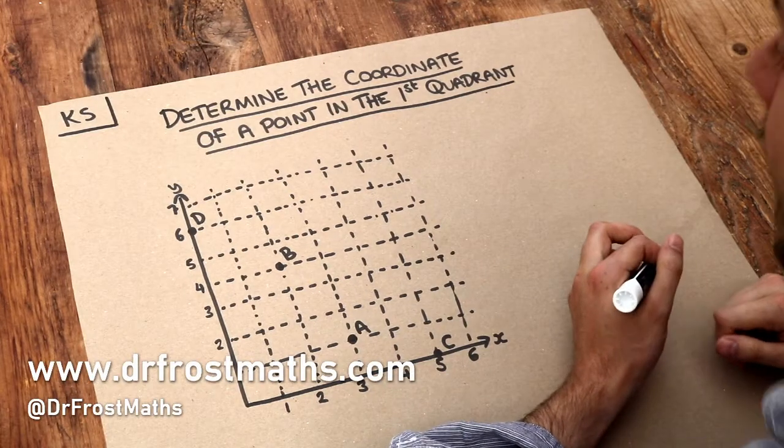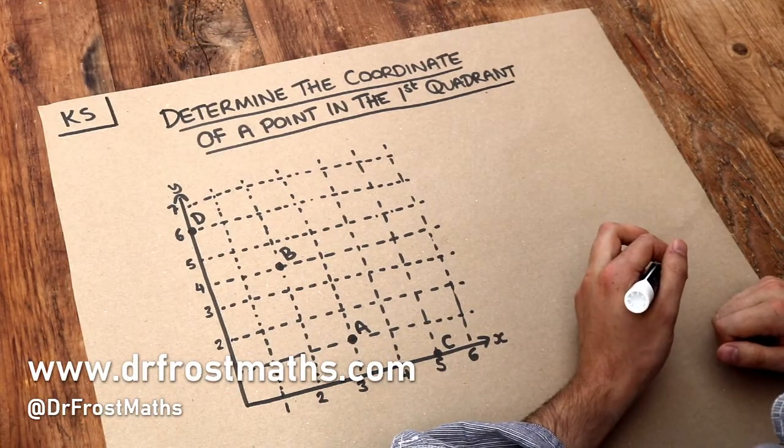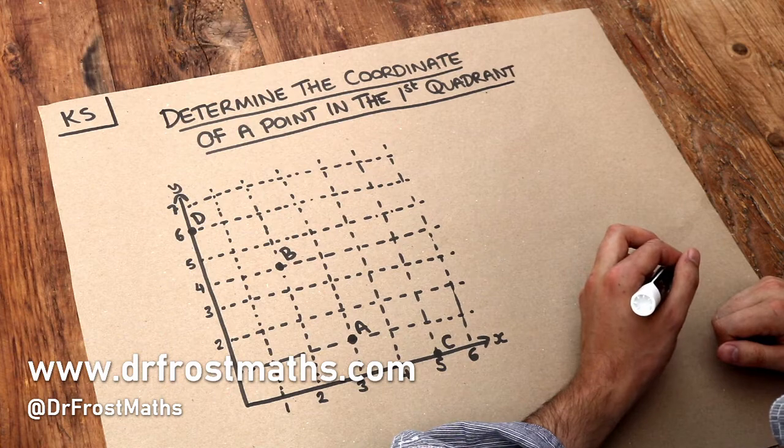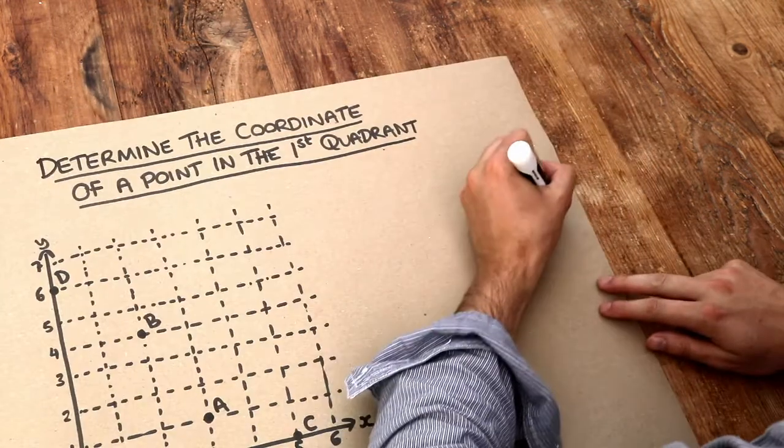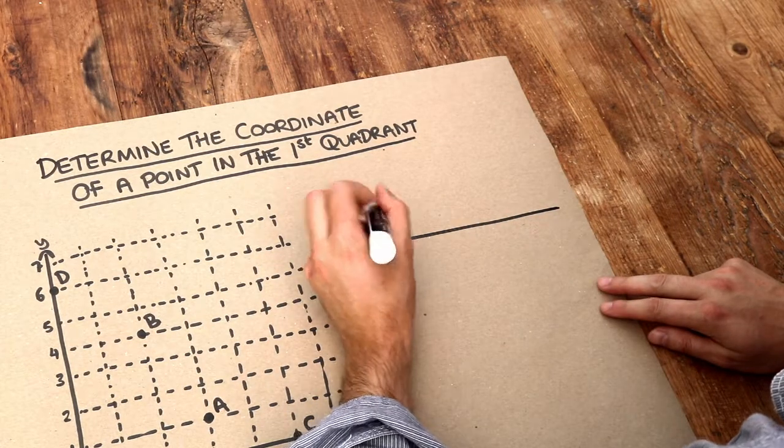Hello and welcome to this Dr. Ross Maths key skill video on determining the coordinate of a point in the first quadrant. Now if we have a single value, we're able to see that value visually by using something called a number line.